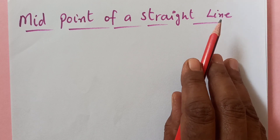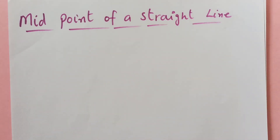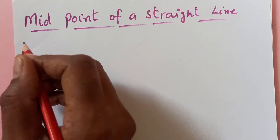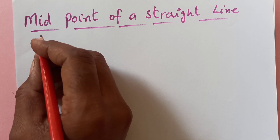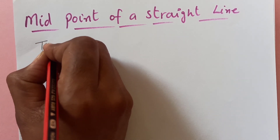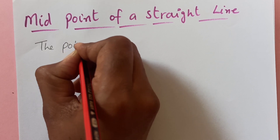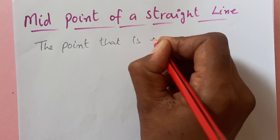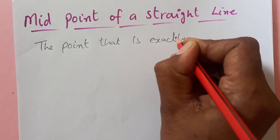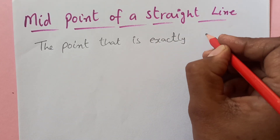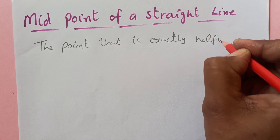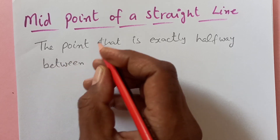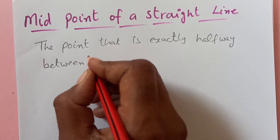So midpoint is a point that is exactly halfway between two original points.